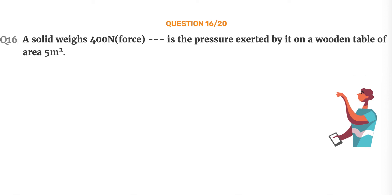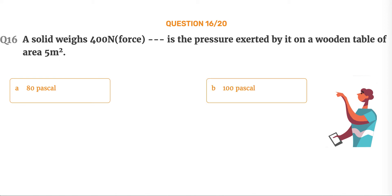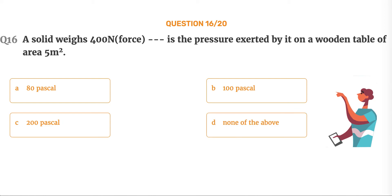Question number 16. A solid weighs 400 N force. What is the pressure exerted by it on a wooden table of area 5 m²? Option A: 80 Pascal. Option B: 100 Pascal. Option C: 200 Pascal. Option D: None of the above.